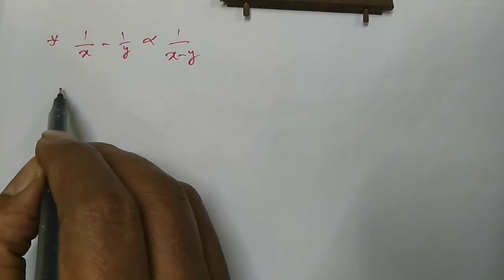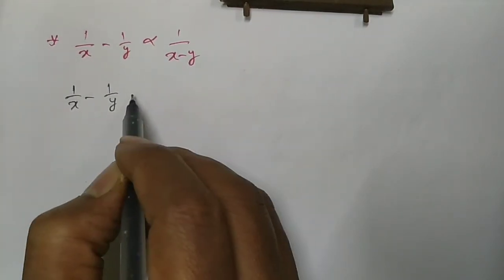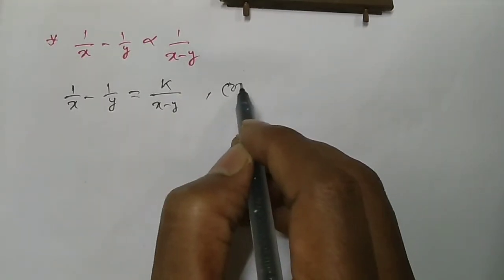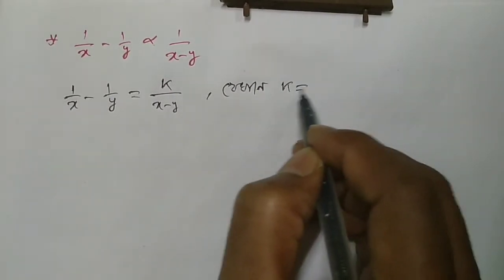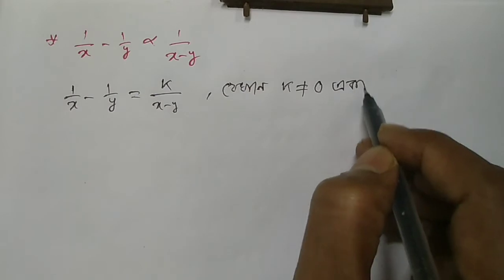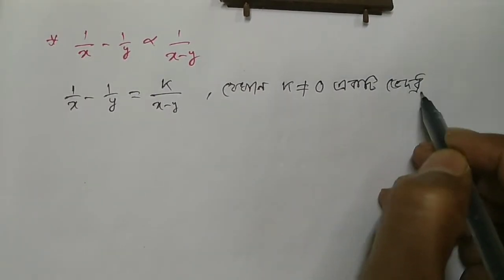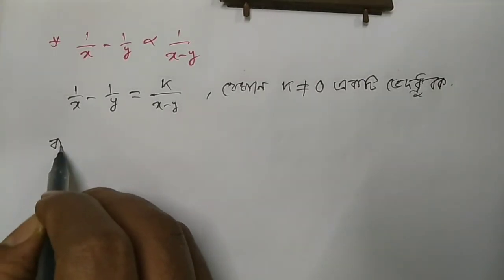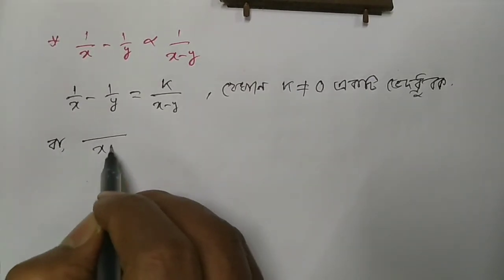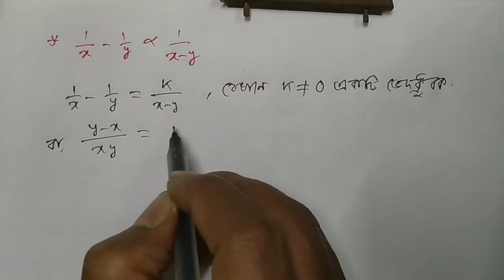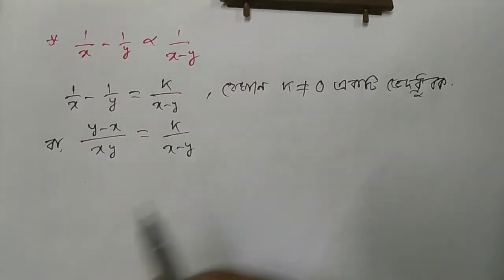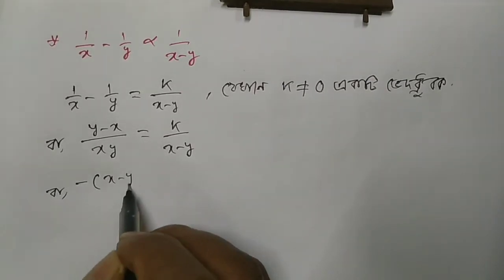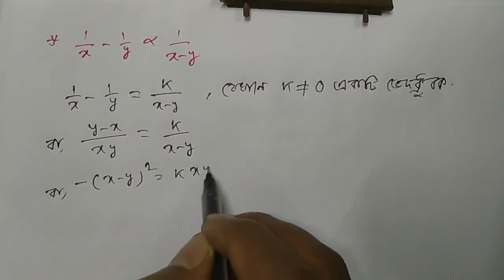So we have 1/x minus 1/y equals k divided by (x minus y). This gives us xy times (y minus x) equals k divided by (x minus y), and after simplification, minus xy times (x minus y) squared equals k times xy, so xy(y minus x) equals k times (x minus y) whole squared equals k·xy.